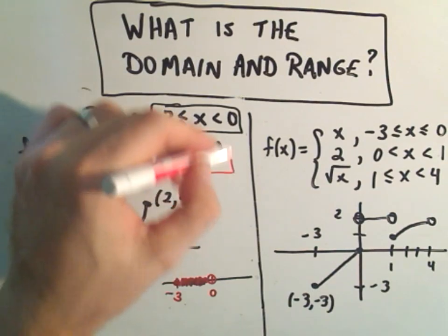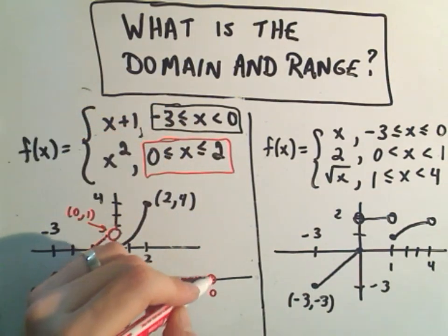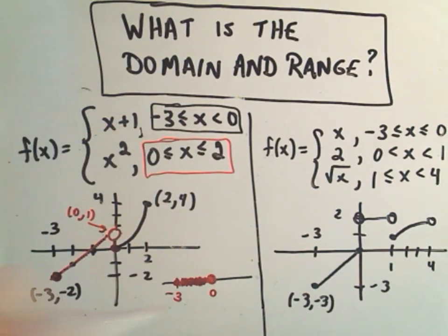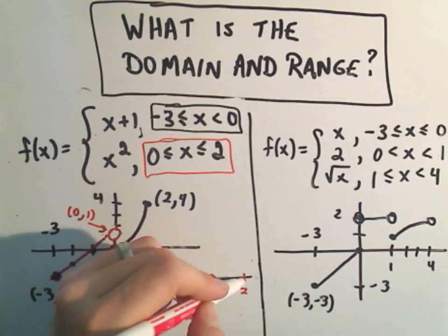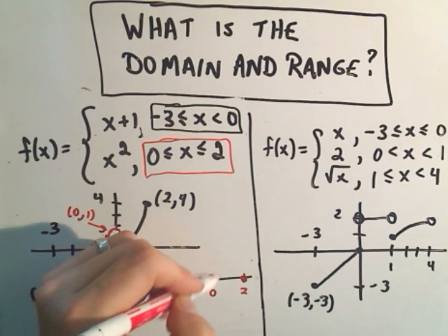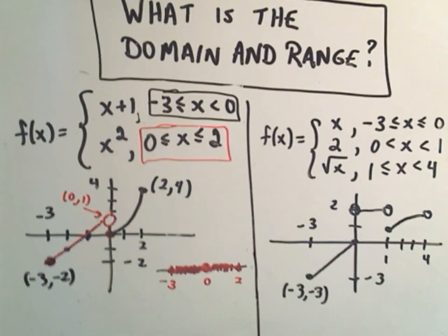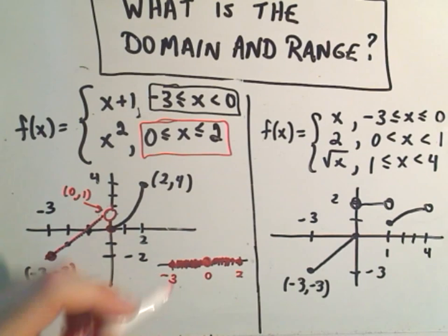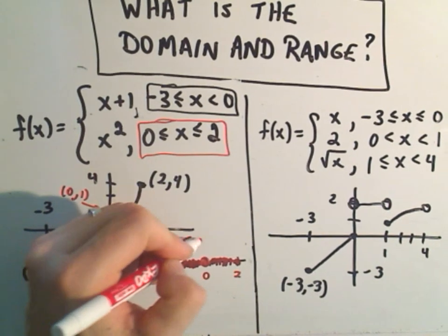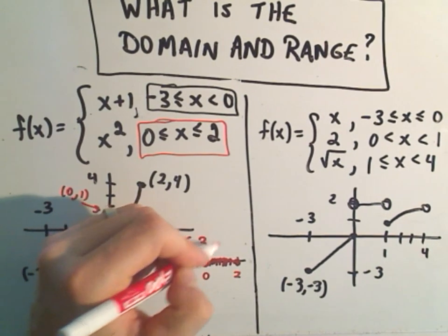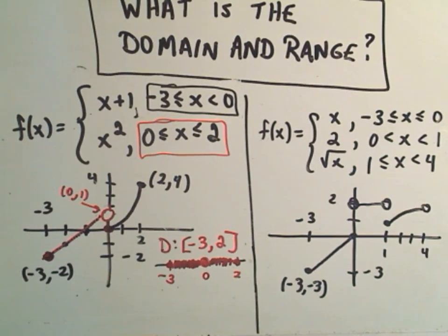If you look at the next interval, it actually includes 0, so it would fill 0 in, and then it goes up to everything up to and including the value 2. If you think about all the values that we have shaded in, that's going to be the domain, and it says the domain will be everything between negative 3 and positive 2.